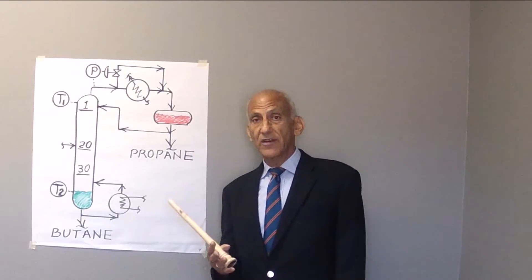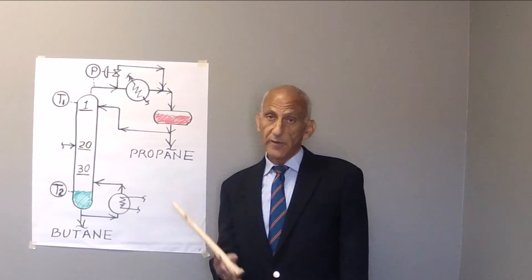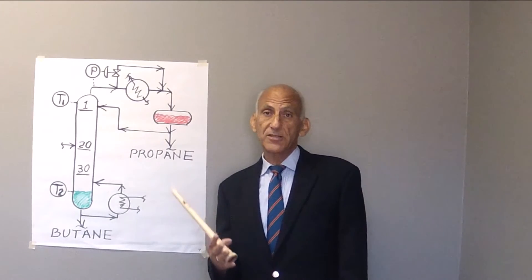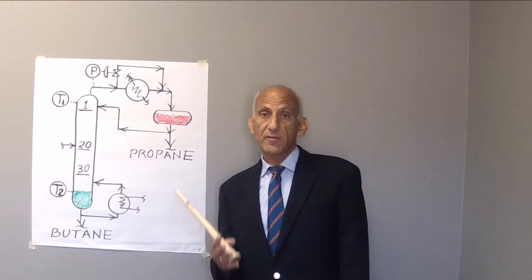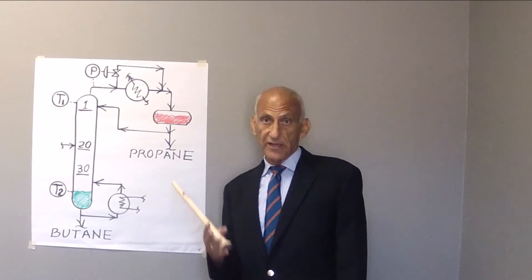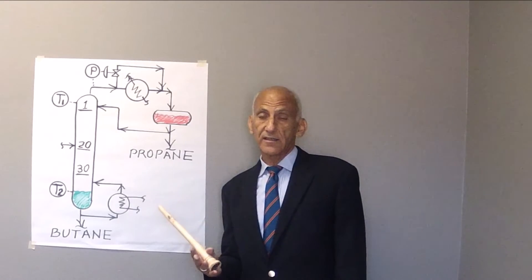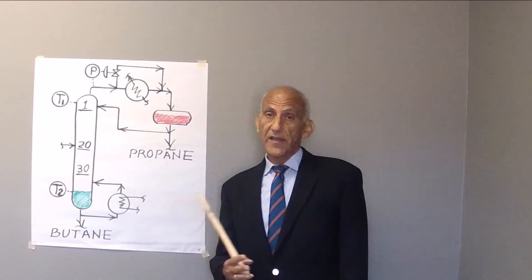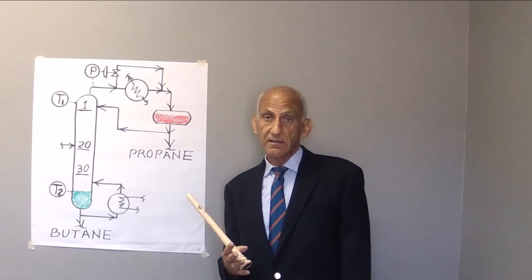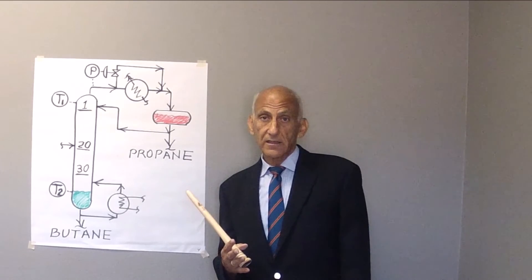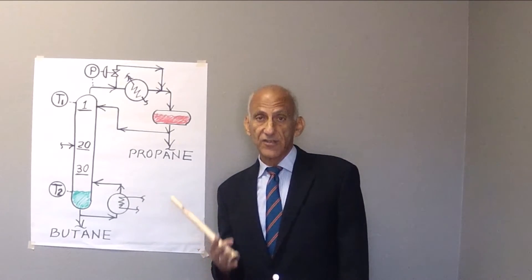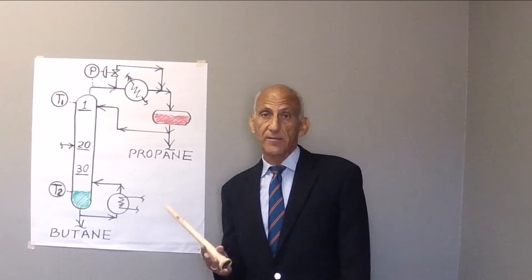So to summarize: lowering the pressure is good in that it stops the trays from leaking and it promotes higher relative volatility. But on the other hand, lowering the tower pressure may be bad because it promotes high vapor velocities, jet flood, and entrainment.